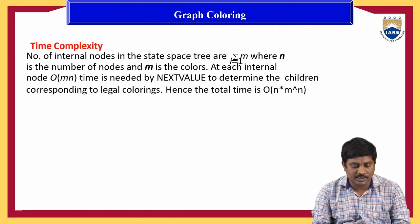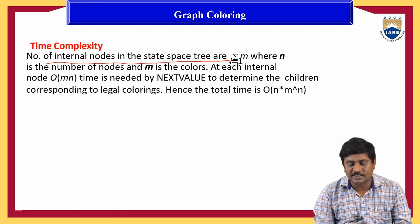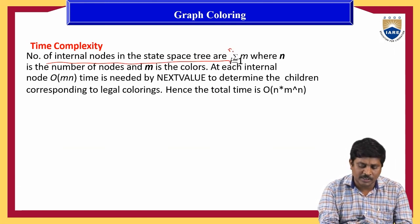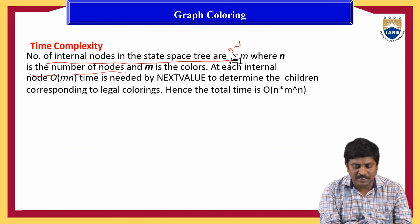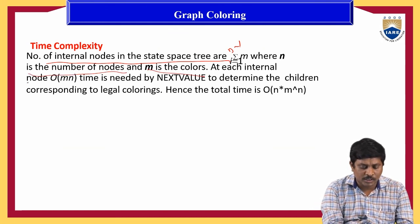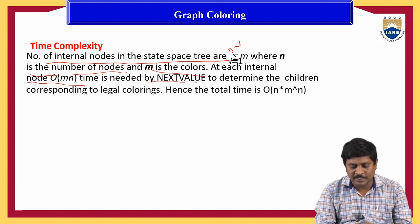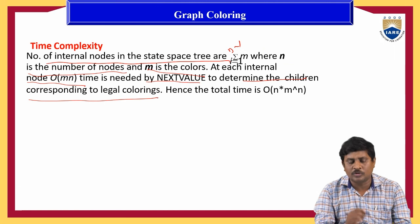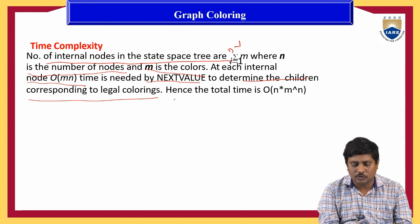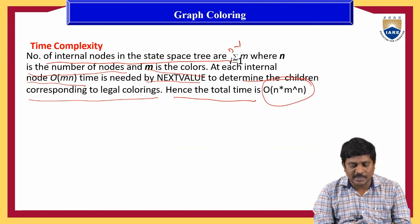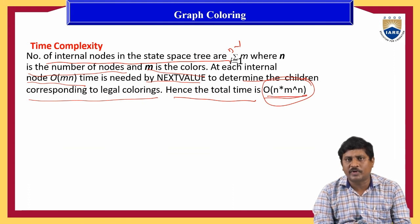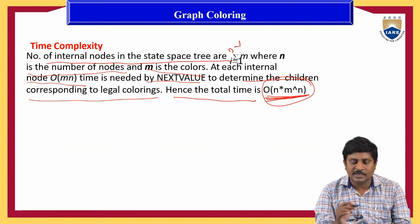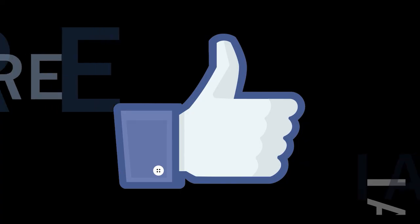Next, the time complexity. The number of internal nodes in the state space tree is the sum over i from 1 to n−1 of m^i, where n is the number of nodes and m is the number of colors. At each internal node, O(mn) time is needed by the next value algorithm to determine children corresponding to legal colorings. Hence, the total time complexity of this graph coloring algorithm is O(n · m^n). Thanks everyone — like, share, and subscribe, and hit the bell icon for more updates.